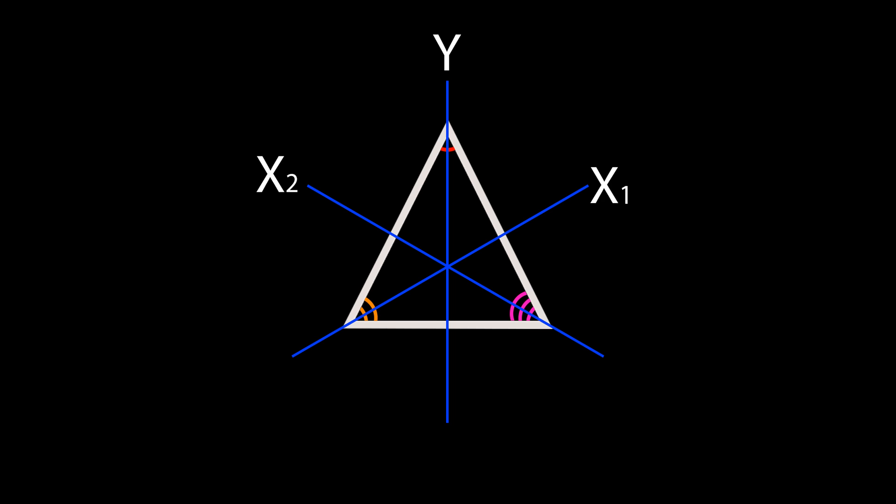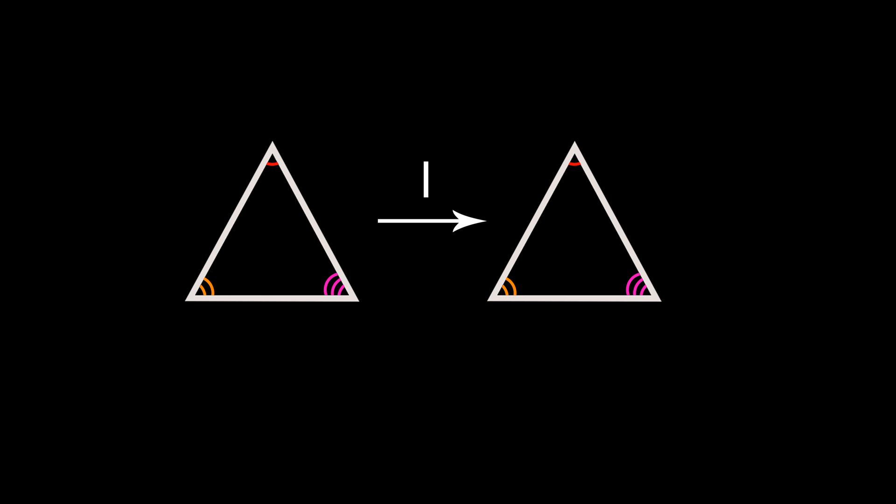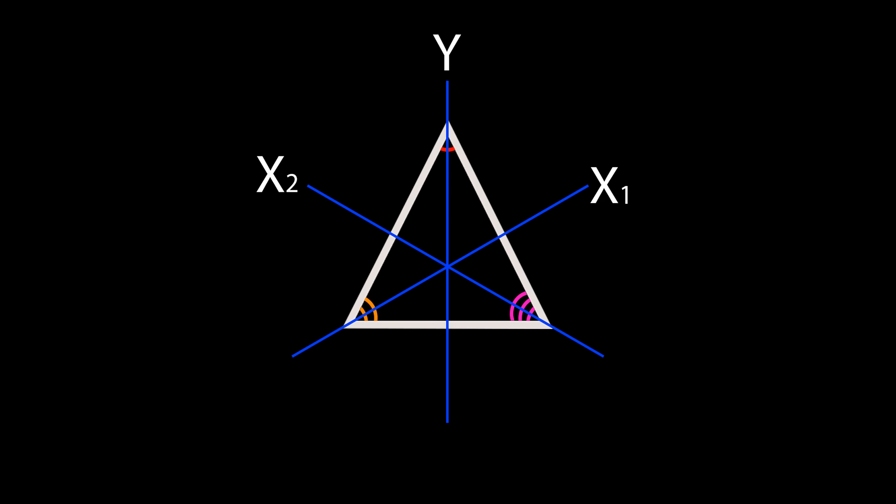We may also want to define an identity transformation, I, which just does nothing. This is all well and good, but as mathematicians, we'll want to explore how these transformations relate to each other.